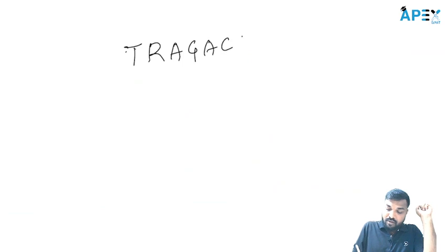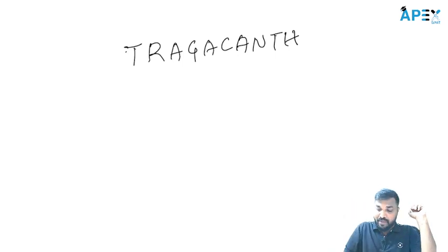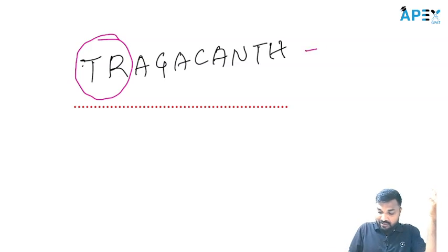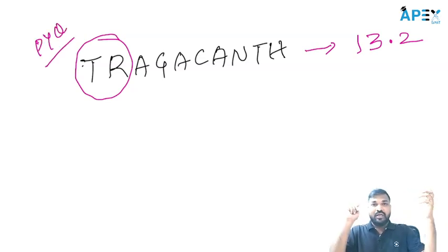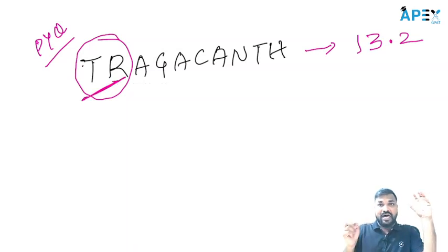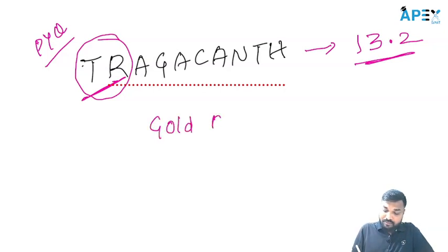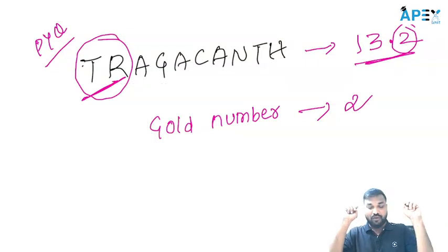Apart from that, in GPAT previous year they asked one question: what is the HLB of Tragacanth? They asked the HLB value for Tragacanth — how to remember? In Hindi we can say TR means 13 — Tera — it is 13.2. They can ask two questions about Tragacanth: one is the HLB value, which is 13.2, and the other is the gold number for Tragacanth, which is 2.